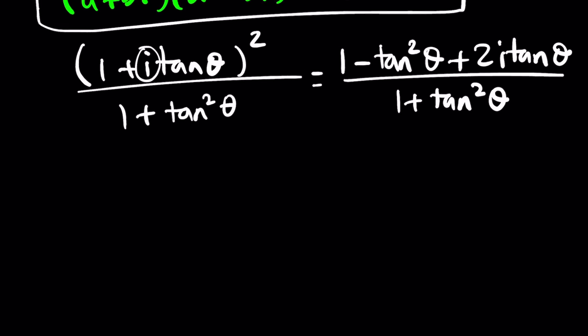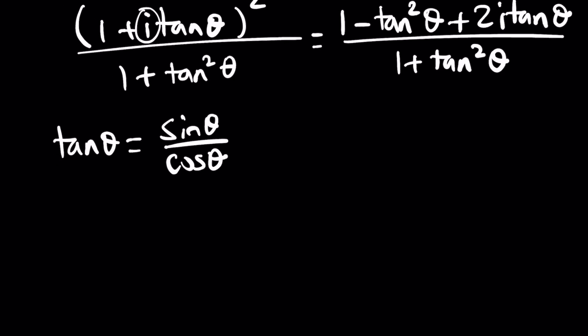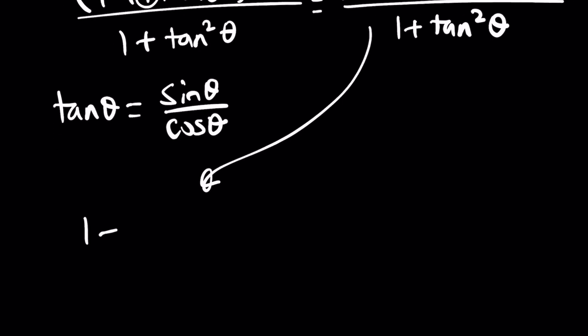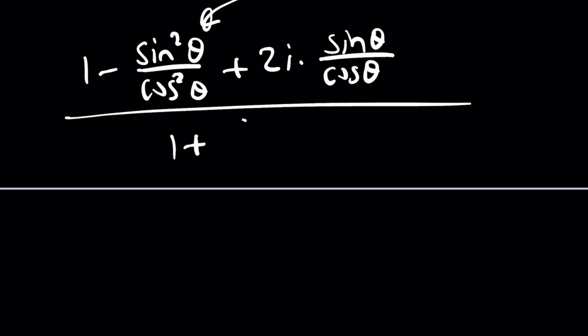In this case, I'm going to go ahead and replace tangent θ with what it is, and you should definitely know this from trigonometry. Or even if you've done some basic, basic trigonometry, maybe in middle school, eighth grade, ninth grade, I don't know when you learn it first. But you should know this. Tangent is sine over cosine. So now I can go ahead and write this as follows. 1 minus sine squared θ over cosine squared θ plus 2i times sine θ over cosine θ. All of that is divided by 1 plus sine squared θ over cosine squared θ. That's a lot of replacements, obviously. And this looks much more complicated. But don't worry, we're going to simplify it.